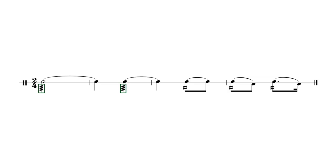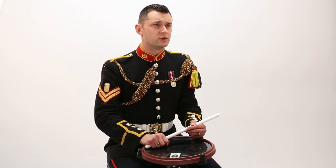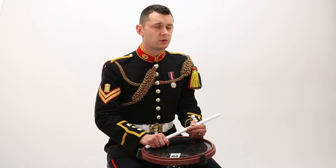Next we're going to talk about rolls. You'll notice three reiteration marks on a minim and a crotchet roll, and anything less than a crotchet in value we only write two. If unsure on rolls, we want you to take the rolls out and play the rhythm only. Then you can identify where the roll will start and stop and put them back in the second time.